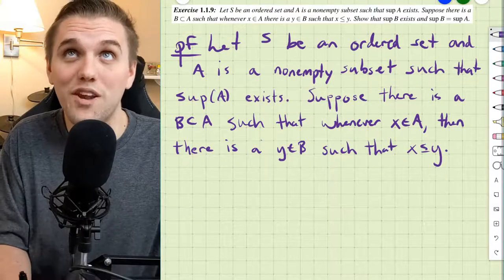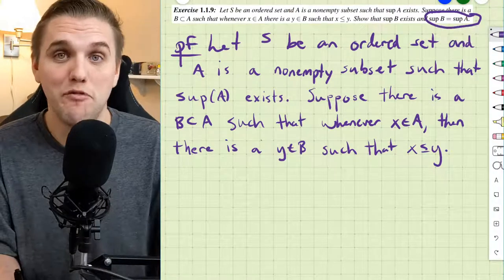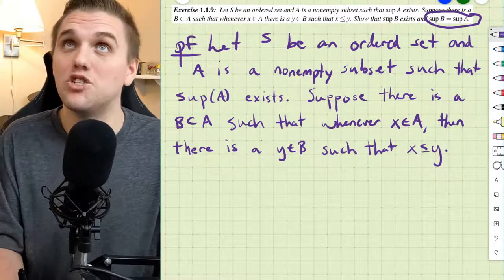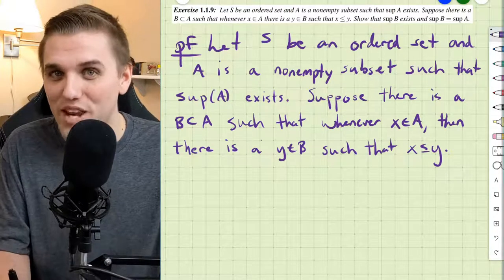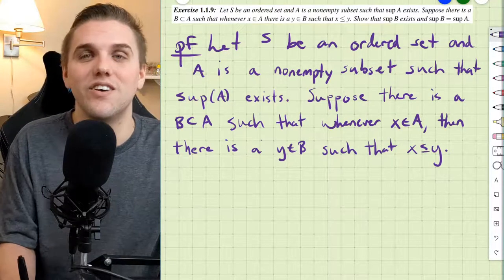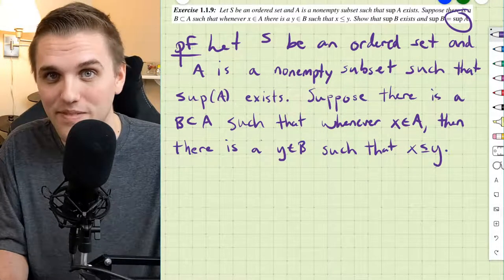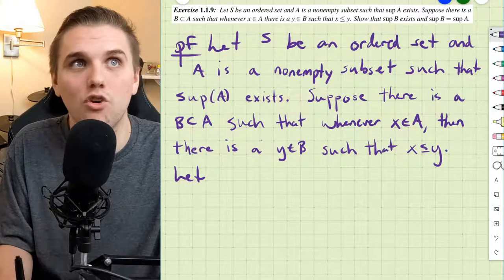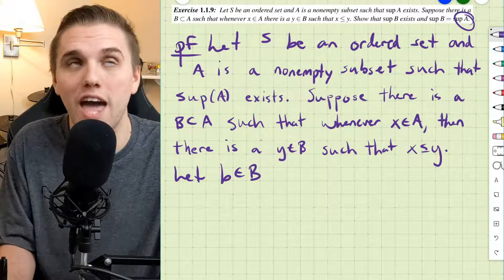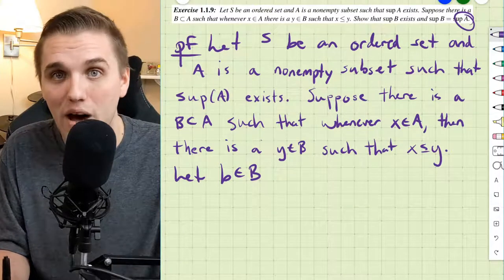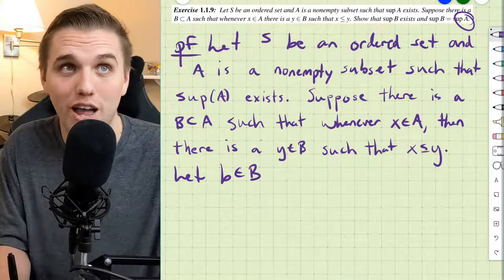We're given a pretty huge hint here — we're literally given what the supremum of B probably is: it's the supremum of A. But we don't get to assume that; we have to show it. So first we're going to show that the supremum of A is an upper bound of B. We're going to grab a random element in B and show that the supremum of A is greater than or equal to this arbitrary element.